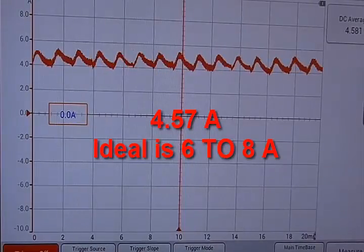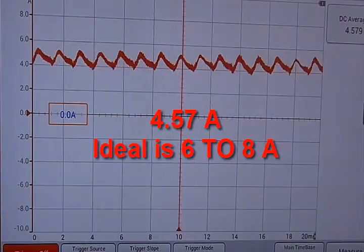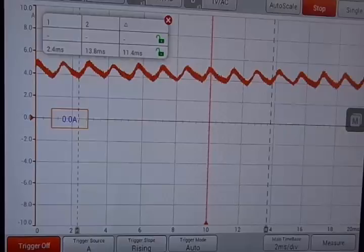Now we're measuring our DC amperage right now when it's steady. We're measuring about 4.67 amps. Ideal would be 6 to 8 amps. There's more than amps to be considered here.